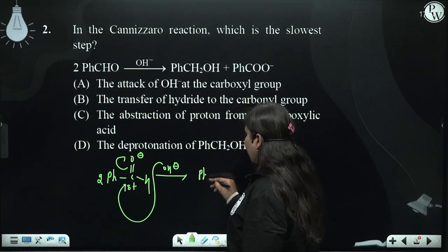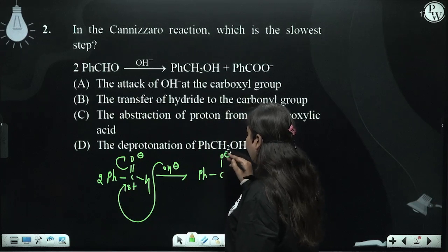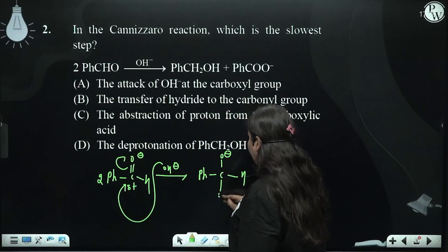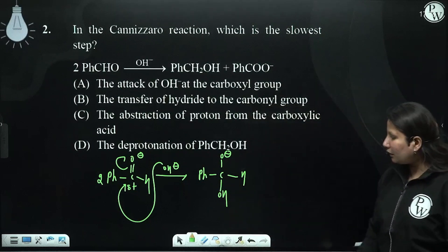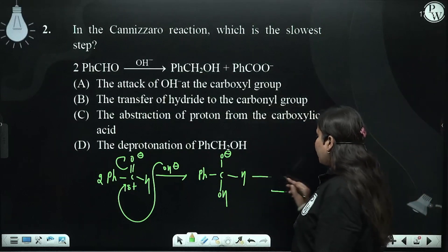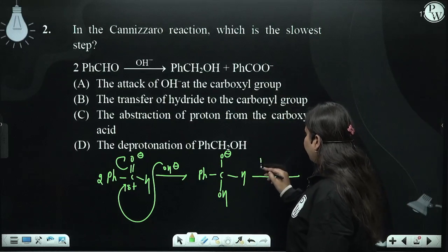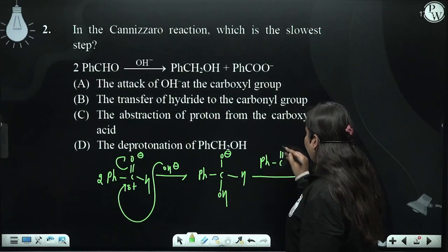So here, we will see what will happen. Ph-C with negative charge, H and OH. Okay? We see that, we will do it directly with this. We will do it with the PhCHO.